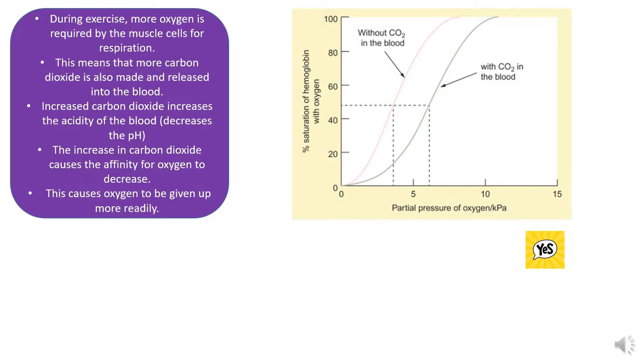This here is something called the Bohr shift. As you exercise, more oxygen is required by the muscle cells for respiration. This also means that more carbon dioxide is made, so more has to be released into the blood. As you release the carbon dioxide into the blood, it increases the acidity. An increase in acidity obviously decreases pH. The increase in carbon dioxide in the blood causes the affinity for oxygen to decrease. So the more carbon dioxide in the blood, the lower the affinity, and that means that the oxygen is going to want to dissociate with the hemoglobin.